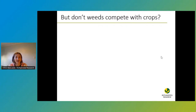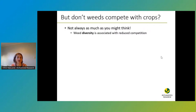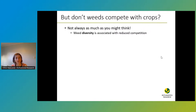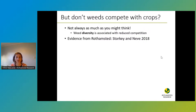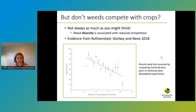Don't we get rid of weeds for a really good reason? Don't they compete with our crops and cause yield loss? That's true, but it may not always be as true as we might think. The key point is that weed diversity is associated with reduced competition between weeds and crops. We have evidence for this from Rothamsted from one of our long-term trials, where researchers compared plots that were equivalent except one had been sprayed with herbicides and one hadn't. What they found was that when the unsprayed plot had more weed species, its yield loss relative to the sprayed plot was much less. When you only had five to six weed species, yield loss was around 60 to 70%, but by the time you got to around 20 weed species, that had dropped to 30 to 40%. Quite a big difference.